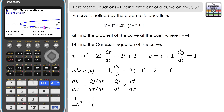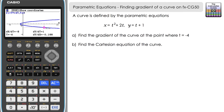For part b, find the Cartesian equation of the curve. We'll use a non-calculator algebraic method since the CG50 doesn't have an algebraic manipulation function, and algebraic calculators aren't typically allowed in examinations. We will use the CG50 in table mode to check our solution once we have the Cartesian equation.